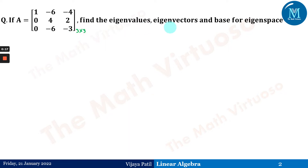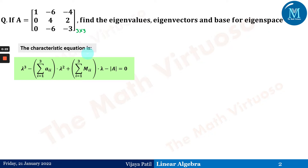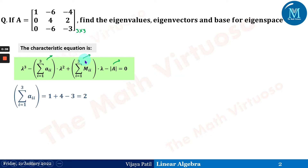We need to find the eigenvalues, eigenvectors, and basis for the eigen space. The characteristic equation is given as: λ³ minus (summation of a_ii)λ² plus (summation of M_ii)λ minus determinant of A equals 0. We are finding each of these terms and putting the values in.